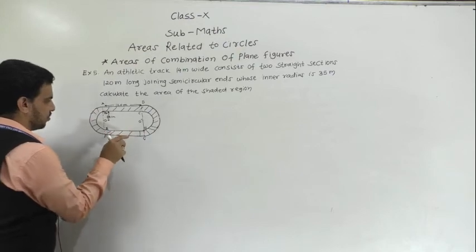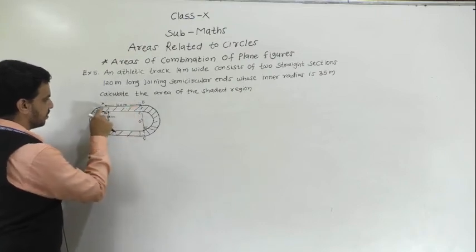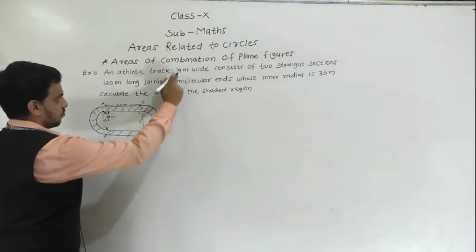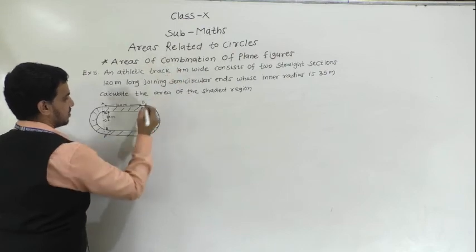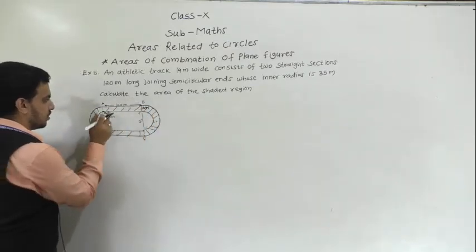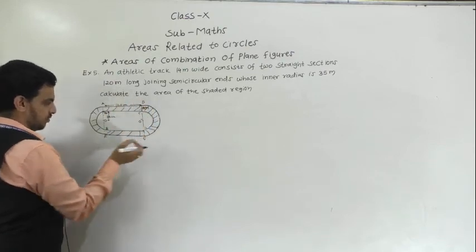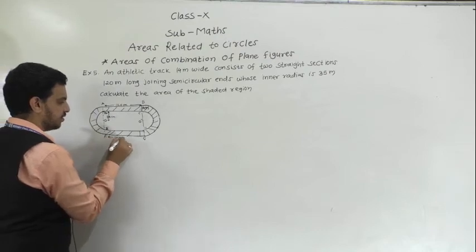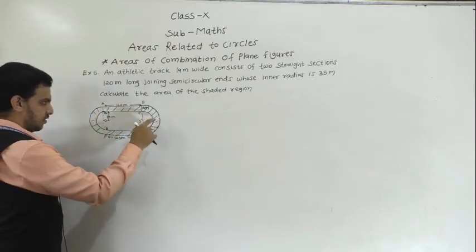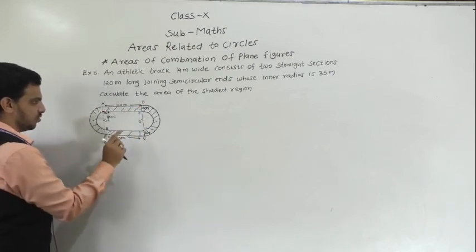Observing the figure, the track consists of two rectangular sections ABCD, each with length 120 metres and breadth 14 metres, plus two semicircular rings. The inner radius is 35 m and the track width is 14 m, so the outer radius R = 35 + 14 = 49 metres.